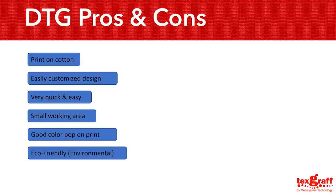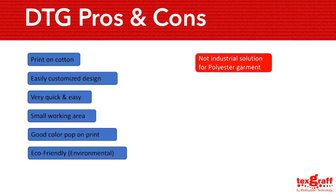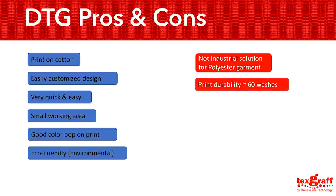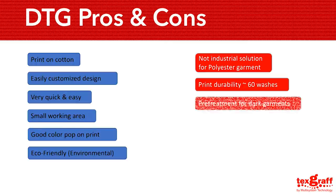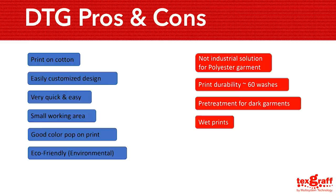Going to the cons: DTG is not an industrial solution for polyester fabrics because pigment ink will not stick properly on 100% polyester, although DTG technology is developing. Next, print durability or washability is roughly up to 60 washes. Next, pre-treatment for dark garments acts as a primer and allows white ink to be printed on the t-shirt, so the CMYK inks produce a vibrant outcome and the white ink becomes dry and washable. However, the pre-treatment process must be done properly, and this added step is not included in the sublimation process because of the different inks. The last con is wet prints — after the printing stage, the ink on the garment will be wet, requiring heat pressing or tunnel dryers to cure the inks.